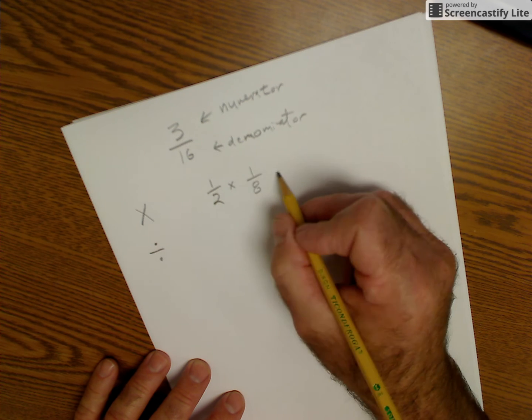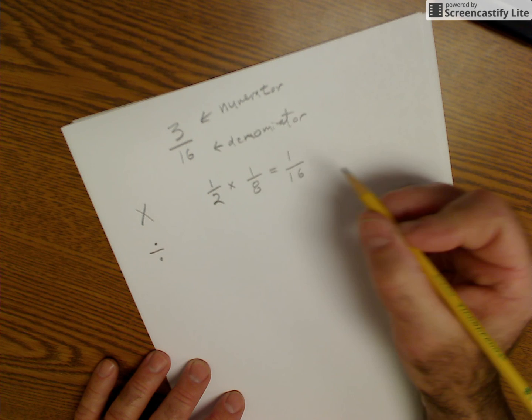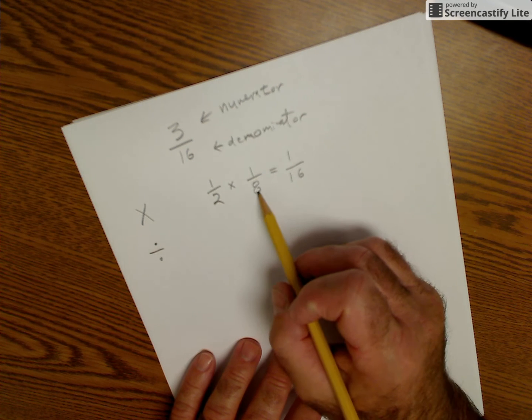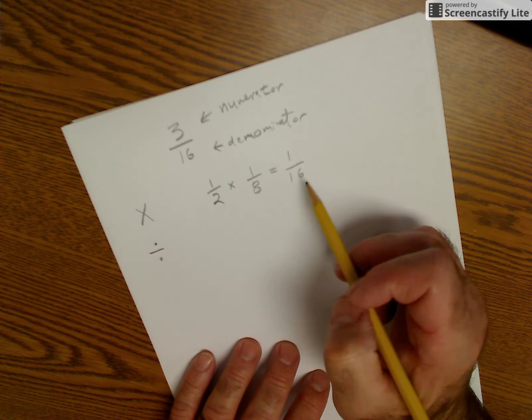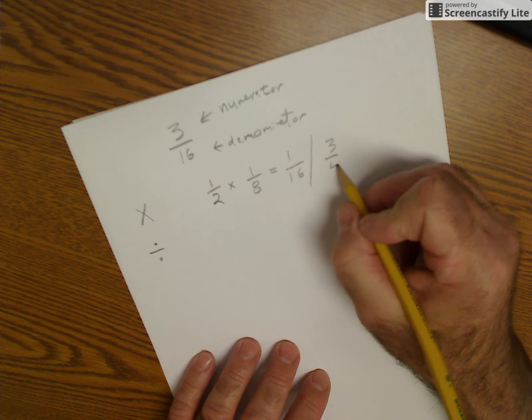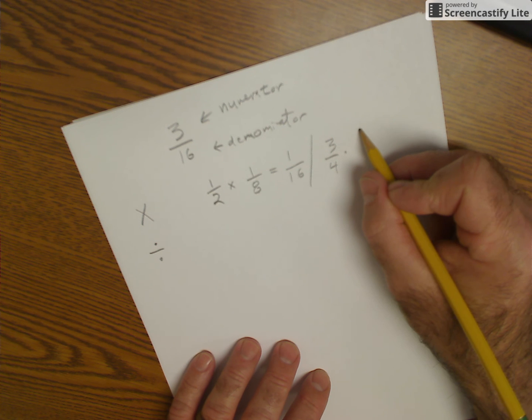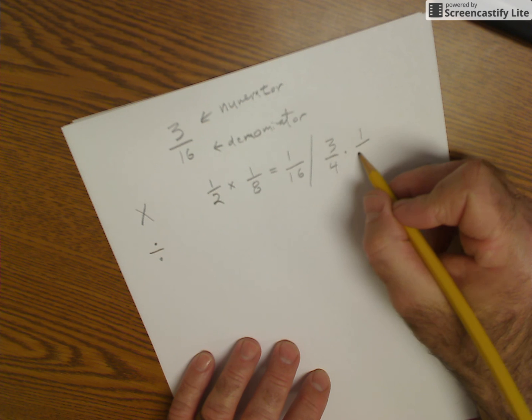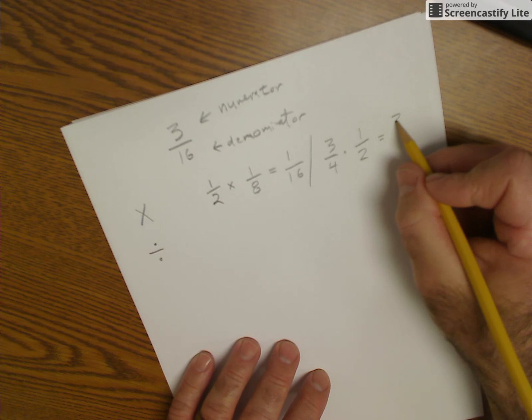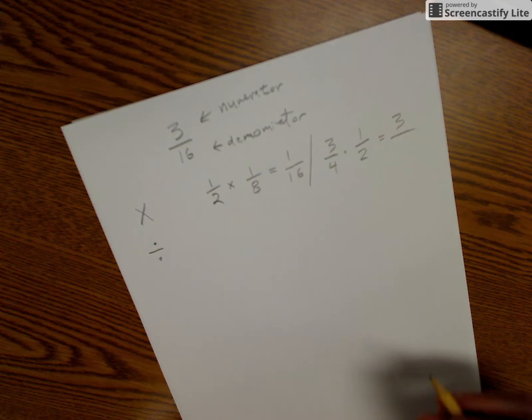So if I say I have 1/2 times 1/8, I just multiply across the top, 1 times 1, and across the bottom, 2 times 8 is 16. Kind of makes sense, because I'm saying what's half of an eighth? Half of an eighth is a 16th. Another example is 3/4 times 1/2. I multiply across the top, 3 times 1 equals 3, and the denominator, 4 times 2 equals 8.